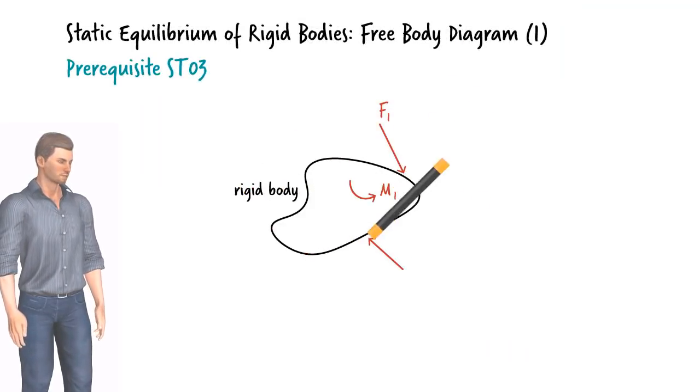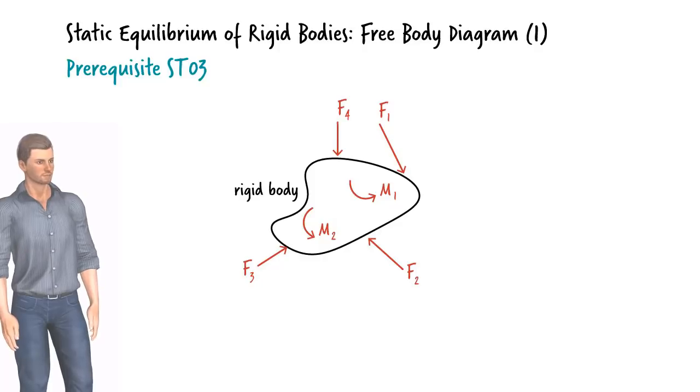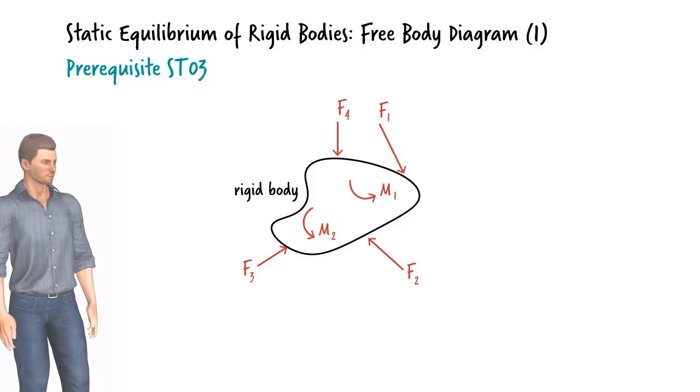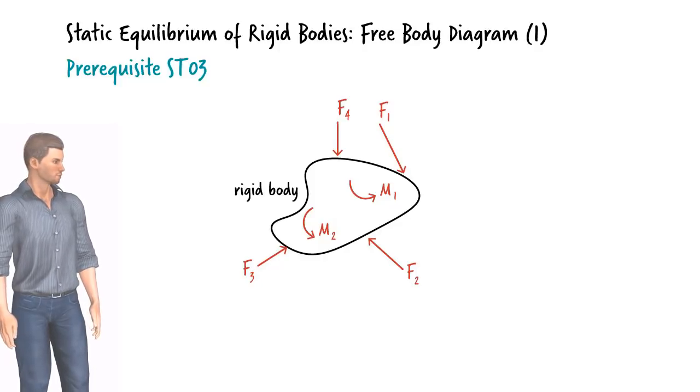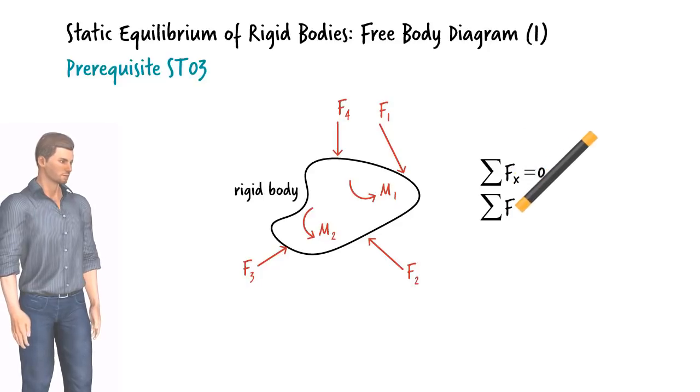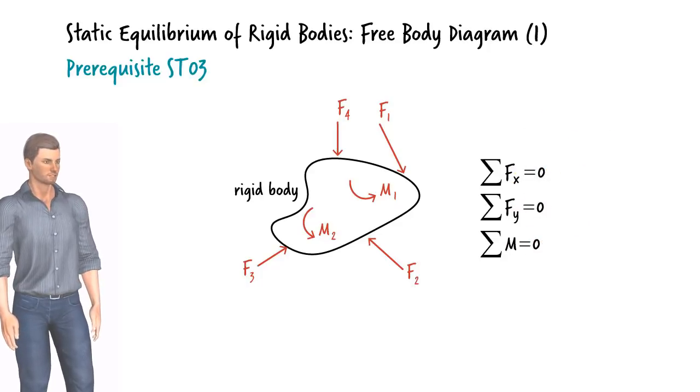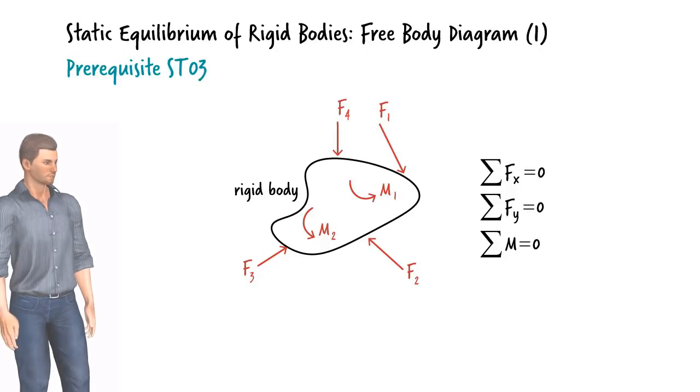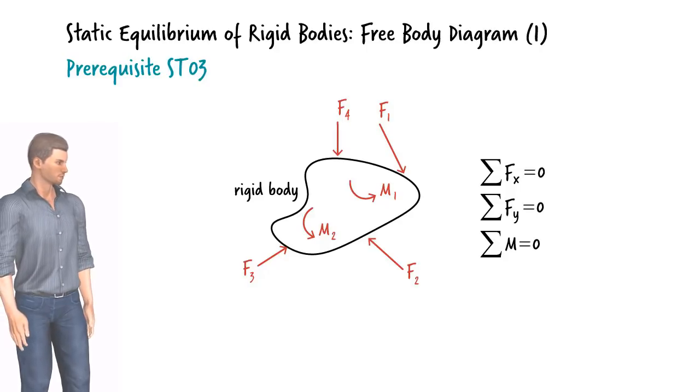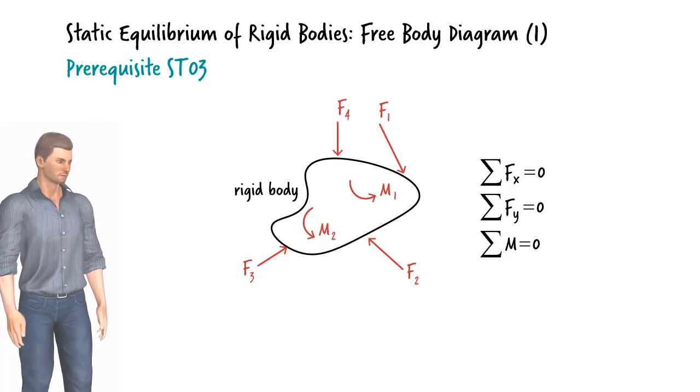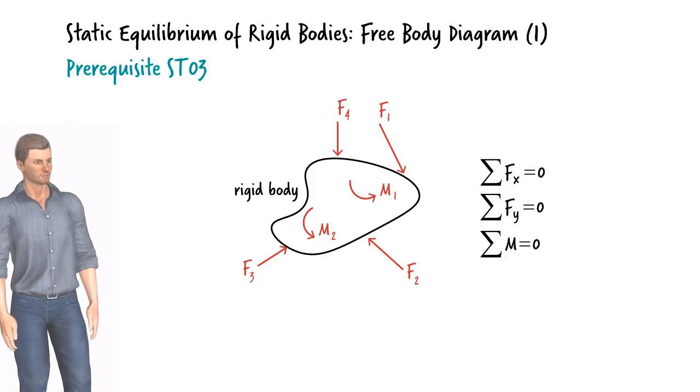In the previous lecture, we talked about the use of static equilibrium equations for analyzing rigid bodies. For a two-dimensional body, the equations relate forces and distances. Therefore it would be helpful to construct a diagram showing all the relevant forces and distances graphically. We call such a drawing a free body diagram.